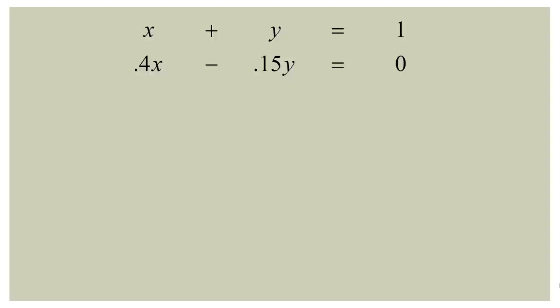We know a couple of things at this point. Whatever we get for X and Y must add up to one, so we have: X plus Y equals one. Then from our matrix operations, we found another equation: 0.4x minus 0.15y equals zero. Those are our two equations. While you could solve this as a simple system of equations, I'm going to use the matrix method so you can see exactly how it's done.